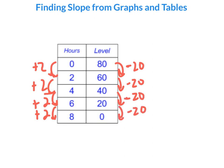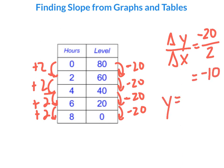For our change in y over our change in x, we have a change of negative 20 every 2 hours. So that's going to be negative 10 when we simplify it. So y equals mx plus b. We have y equals negative 10x plus our y-intercept of 80.